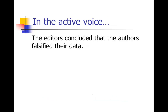Hopefully in that sentence you noticed there were two instances of the passive voice to turn back into the active voice. We had 'it was concluded by the editors' — the editors did the concluding, so the editors is the subject: 'the editors concluded.' But then there was also 'the data had been falsified by the authors' — that's also passive, because what was falsified? The data — that was the object. Who did the falsifying? The authors. So to turn this all back to the active voice: 'The editors concluded that the authors falsified their data.'